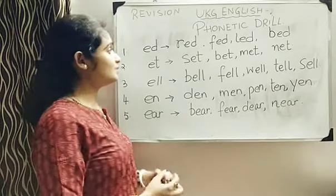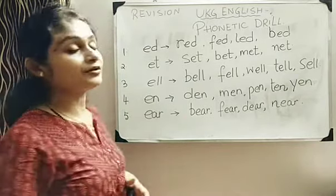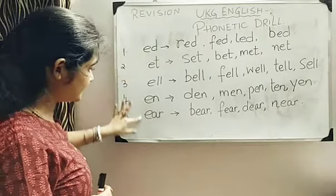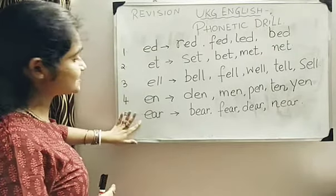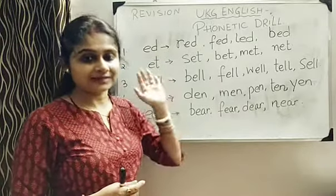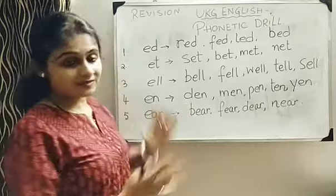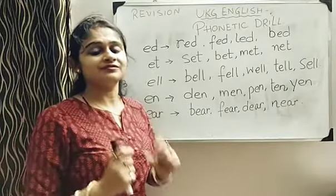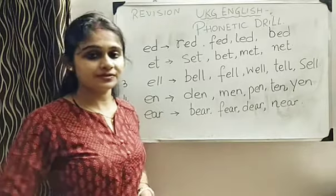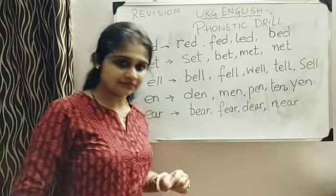So today we have done again phonetic drill. But which one we have done? We have done with E. That means these all words have, when you add prefix one letter with it and when you get the word, then each word will have E sound. The sound will be related with E. Letter E. Okay?